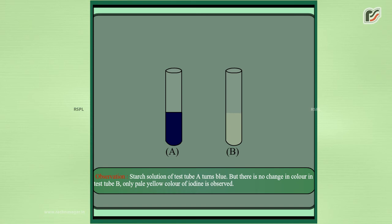Observation: Starch solution of test tube A turns blue. But there is no change in colour in test tube B. Only pale yellow colour of iodine is observed.